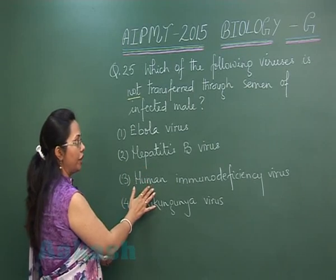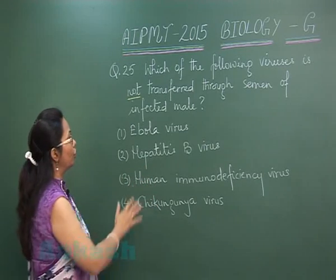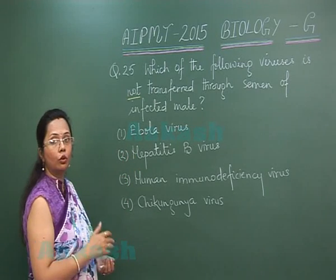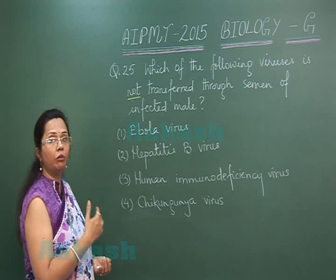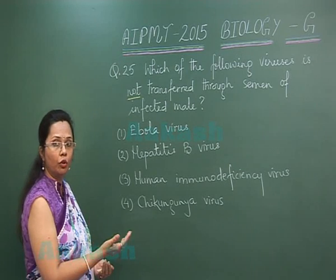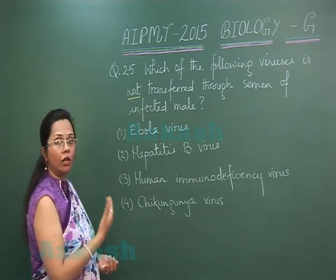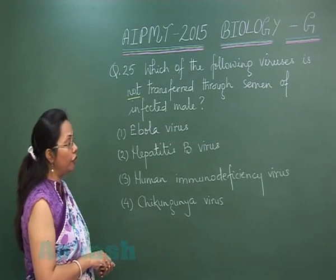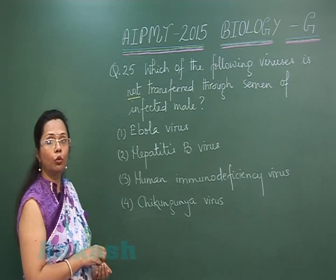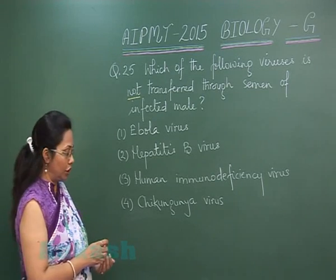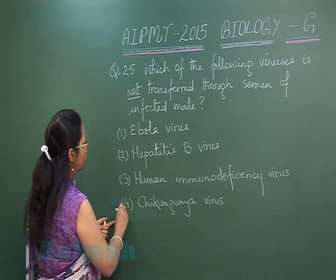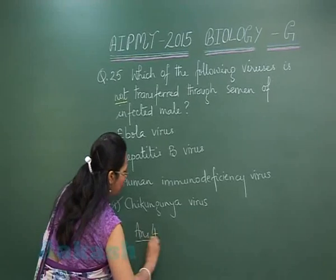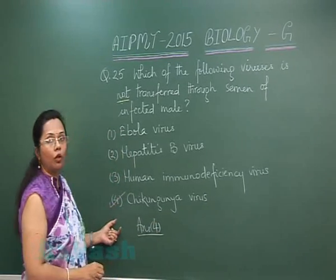Hepatitis B and HIV can obviously be transferred through semen. Ebola virus also can transfer through semen, although it can also spread human to human through droplet infection. However, chikungunya virus is transmitted only through a vector — the Aedes mosquito. So the answer is chikungunya virus, which means the answer is 4. Let's move on to question 26.